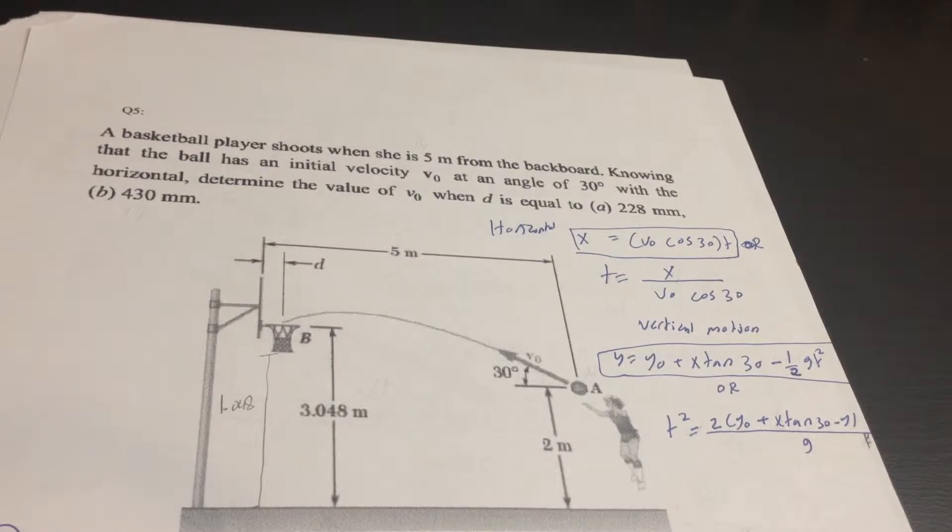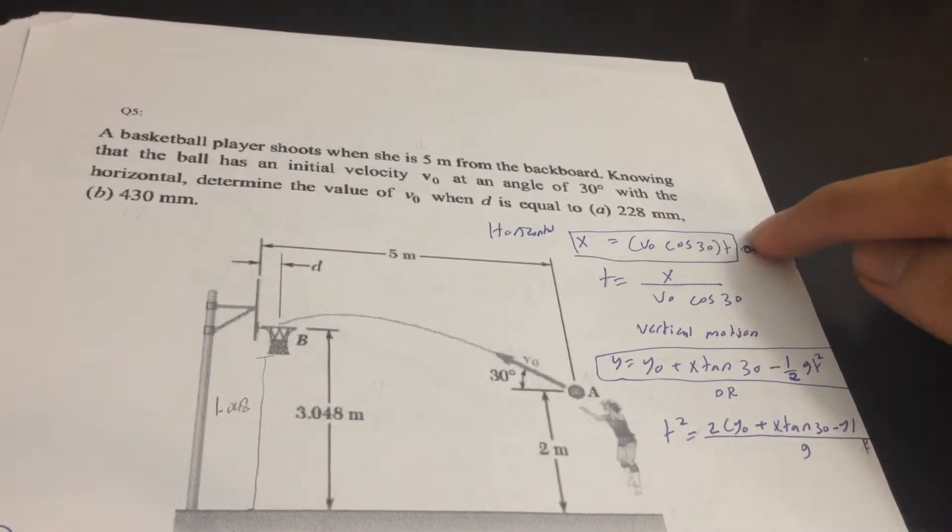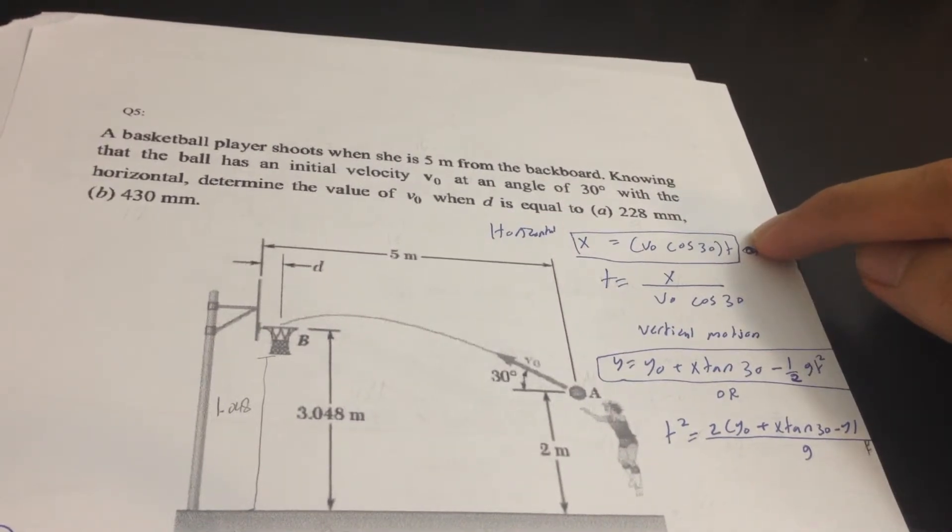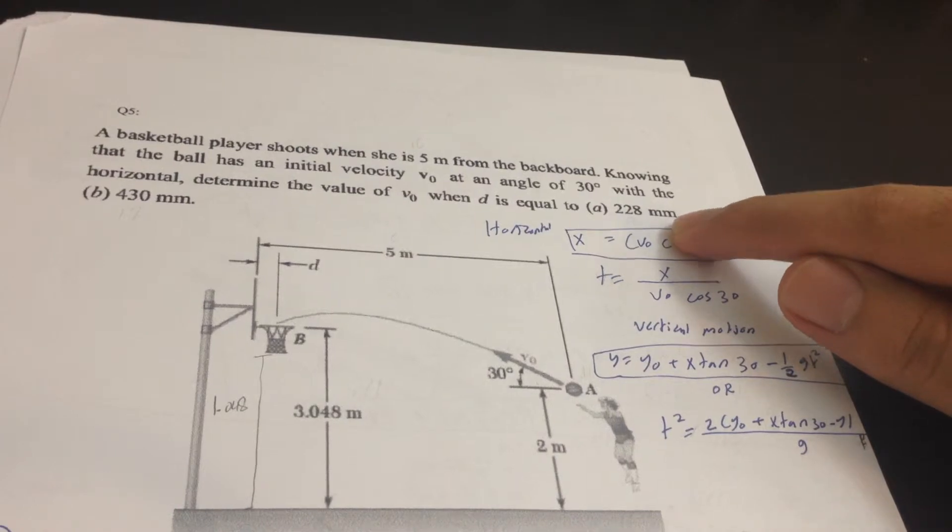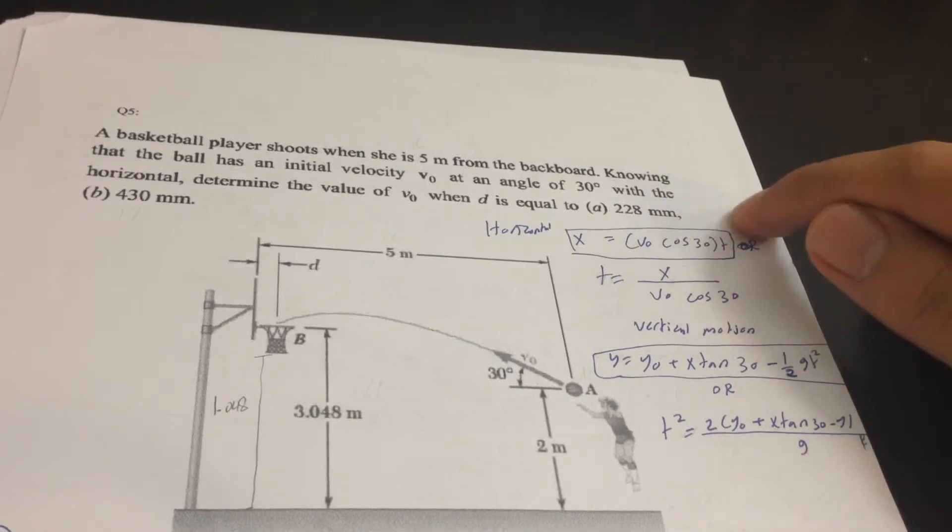Of course, we know that X equals V0 cosine 30t. And before we do this, we need to convert from millimeters to meters. All we have to do is plug it into your calculator.